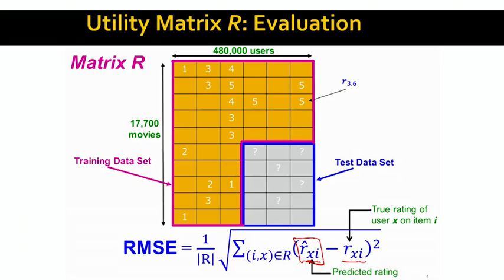We sum all these squared errors across all users and all movies, take the square root, and divide by the total number of ratings — this is the root mean squared error. So in some sense, our goal is to complete the matrix R wherever the rating values are unknown, as accurately as possible, predicting how much a given user is going to like a given movie.